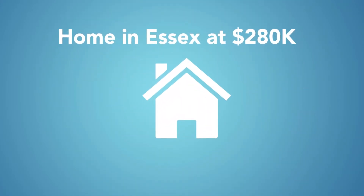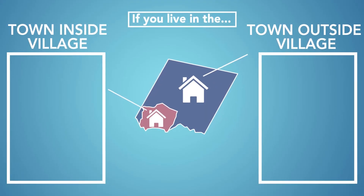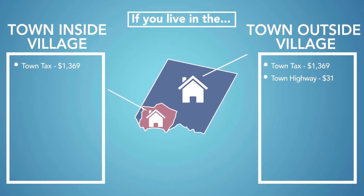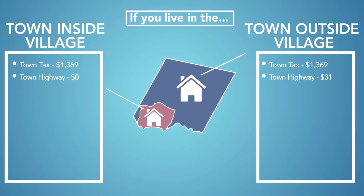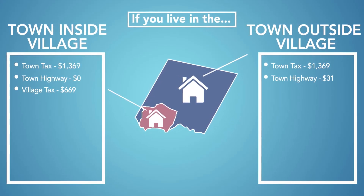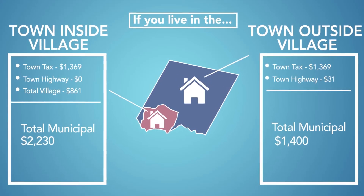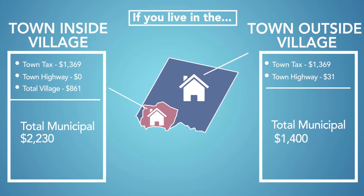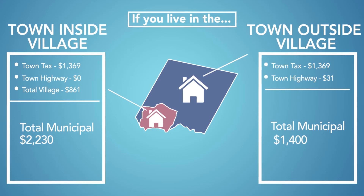What does all of this mean for the average owner of a $280,000 house in Essex? If you live in the town — either inside or outside the village — your municipal taxes are $1,369. Additionally, if you live in the town outside the village, you pay a $31 town highway tax. If you live in the town inside the village, you pay nothing to the town highway tax. However, you do pay village municipal taxes of $669, and for EJRP, $192. Your total village taxes are $861. Add that to the town municipal taxes of $1,369, and in the town inside the village, your total municipal tax bill comes to $2,230. In the town outside the village, you're looking at a total municipal tax bill of $1,400.